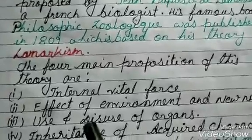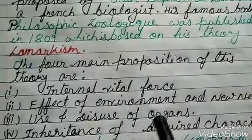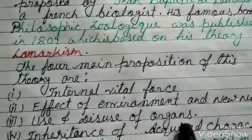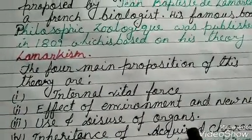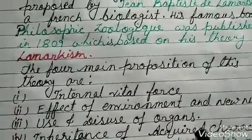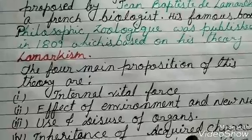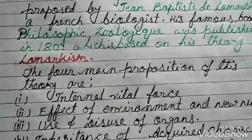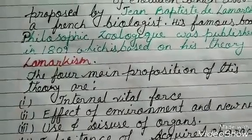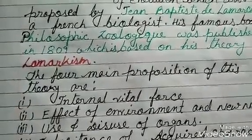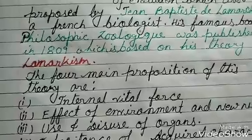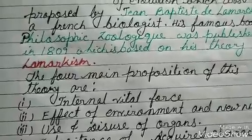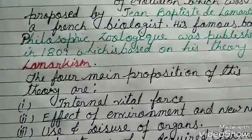Next is use and disuse of organs. It means if an organ is constantly used, it would be better developed, whereas disuse of an organ results in its degeneration and finally it may disappear.